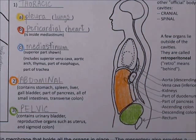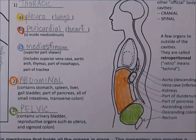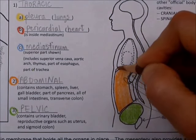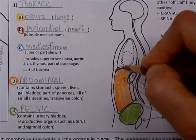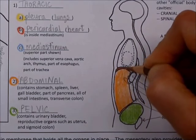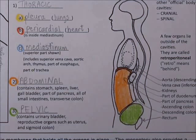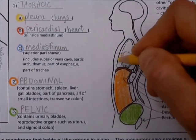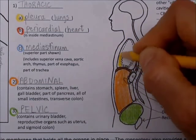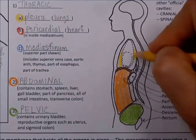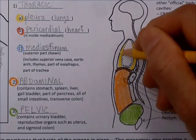Let's keep going. We've got that diaphragm right here dividing the thoracic from the abdominal, and we've got a side view here of the pleura.